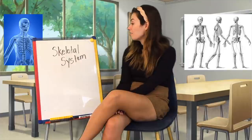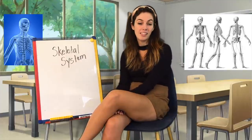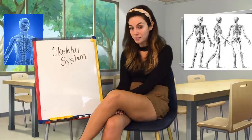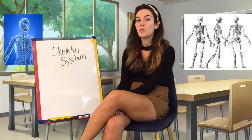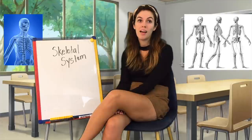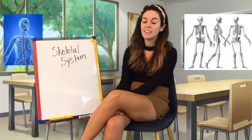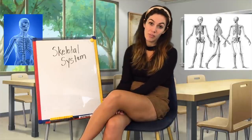Another thing that the skeletal system does is it makes blood. Within your bones, your body is making red and white blood cells. These are formed by a tissue called bone marrow, and it's in the center of a bone.